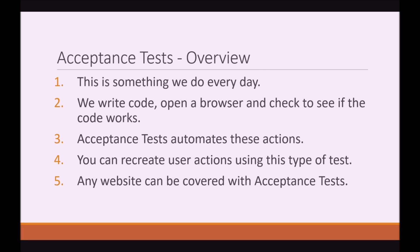So, acceptance tests. This is something we actually do every day — whether it's clients, a manager, or a developer — you write code, open a browser, and check to see if the code works. Acceptance tests automate these actions, so you can recreate user actions using this type of test. For example, you can test whether a user can log in: the automated test will open a browser, fill in a form, hit the submit button, and check if the user has logged in. Any website can be covered with acceptance tests.